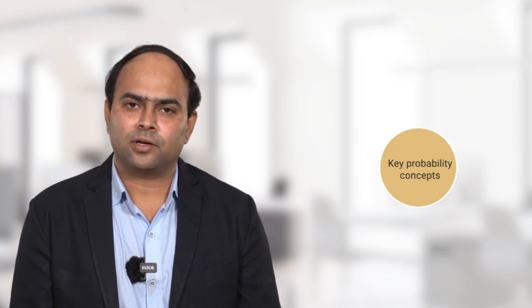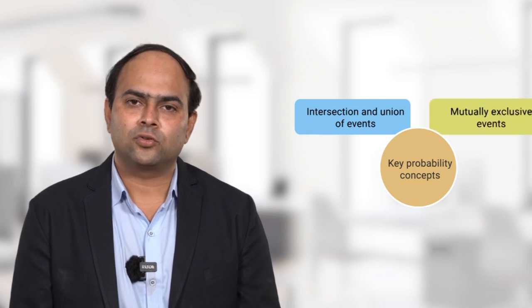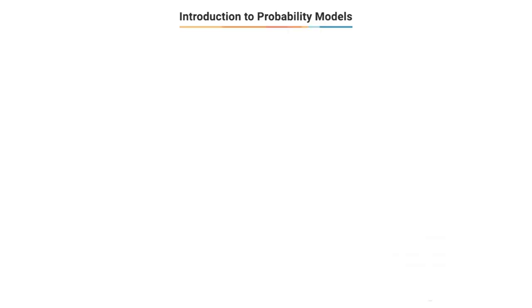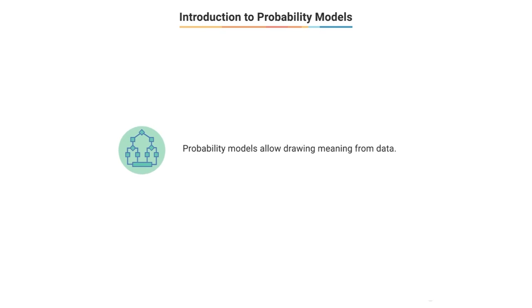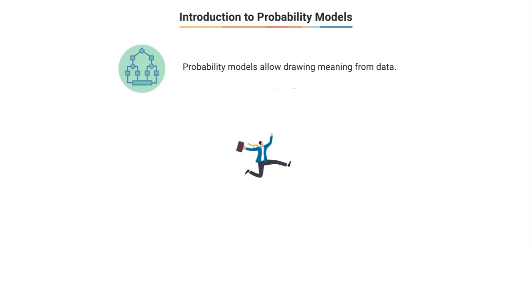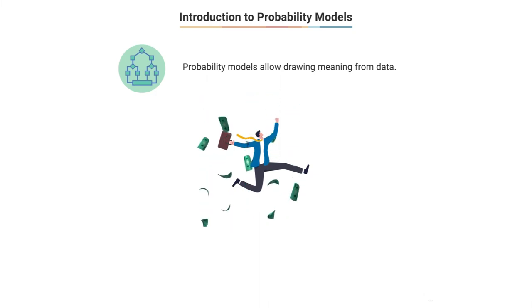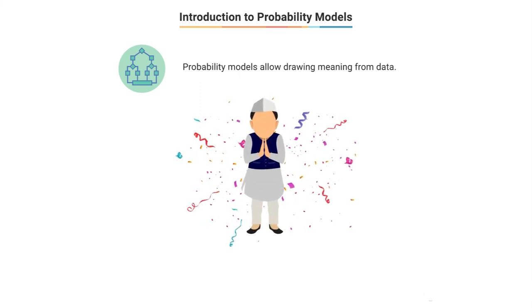We will be introduced to important probability concepts such as intersection and union of events, mutually exclusive events, and complex events. Probability models empower statisticians to draw inferences from sample data and make statements like: the average salary of a data scientist in the US is $97,000 plus/minus $39,000 with 95% confidence.